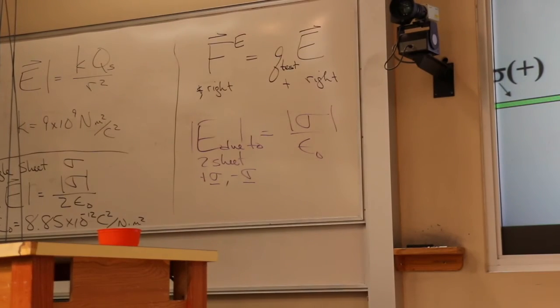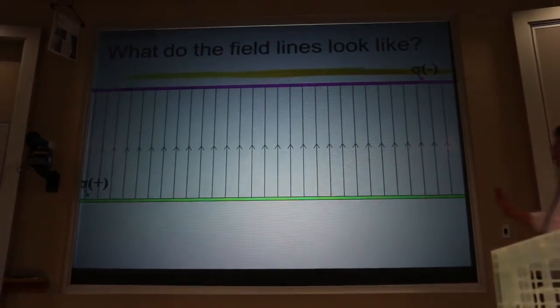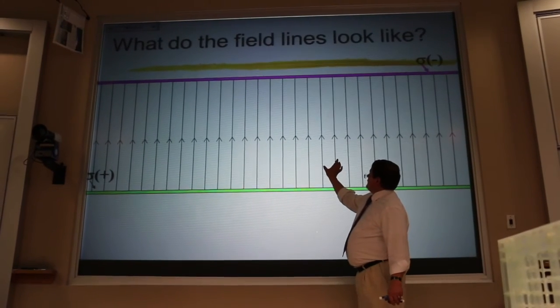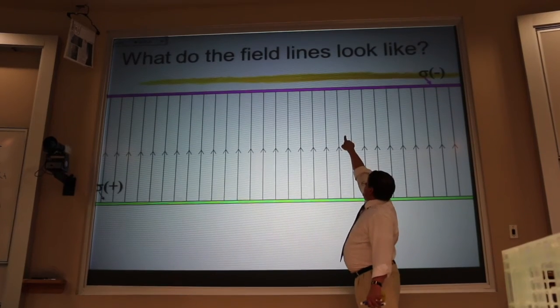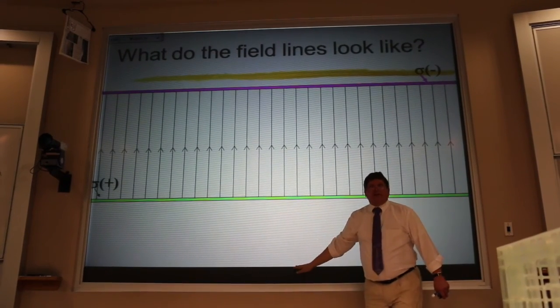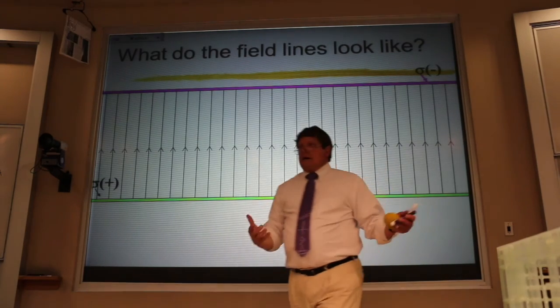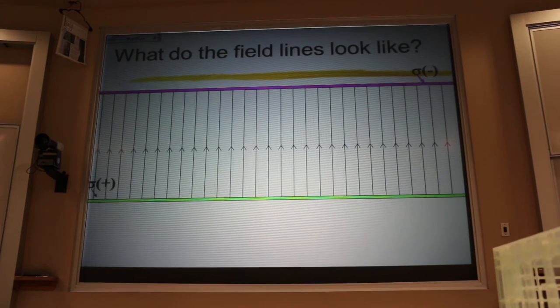Now, I would represent that field like this. Between the plates, I have field lines that are parallel. Meaning I have the same size field here, as here, as here, as here. And outside the sheets, I have no electric field. I represent that with no field lines.